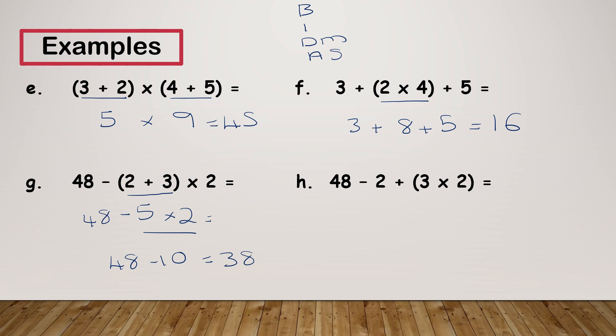On this final one I've got 3 times 2 in my brackets, so I need to do that first. 3 times 2 is 6, so I've got 48 take away 2 plus 6. Addition and subtraction are equally weighted — that's why they're on the same line — so if I have an equation that just has addition and subtraction, I still work from left to right. So 48 take away 2 is 46, plus 6 gives me 52.